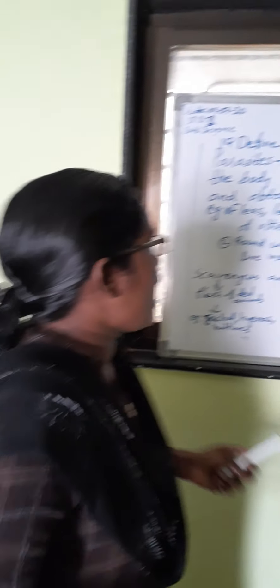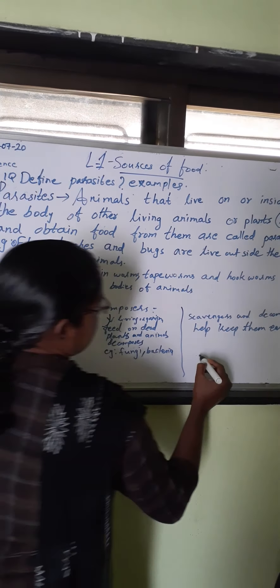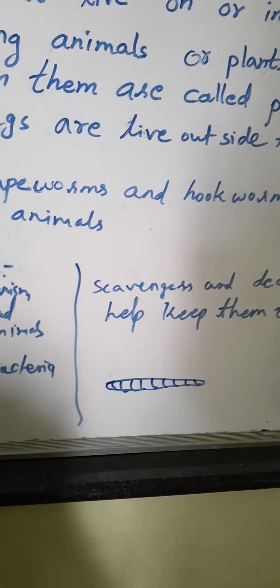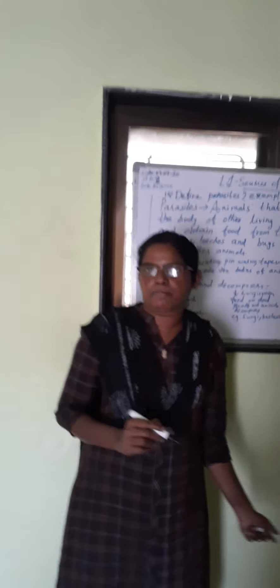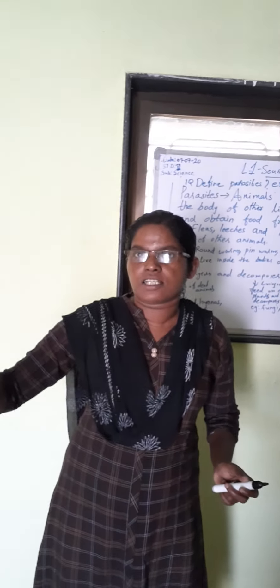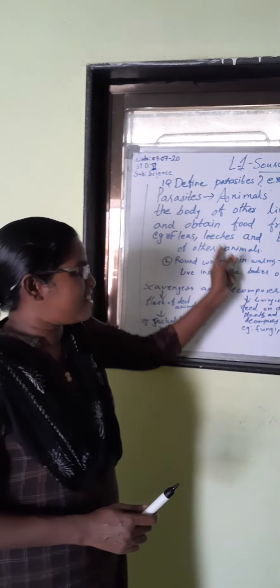For example: fleas. Fleas are like a cow's fly. Next, leeches — leeches have a shape like that. Bugs live outside the body of other animals. When animals are grazing in a field, some very small flies attach to their body. So fleas, leeches, and bugs live outside the body of other animals — that is a parasite.